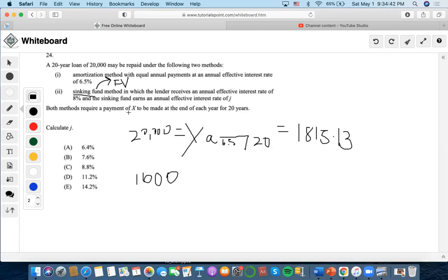Both methods require a payment of X to be made at the end of each year for 20 years. So the payment of $1,815.13 must apply to method two as well. If the sinking fund is helping us receive $1,600 a year,